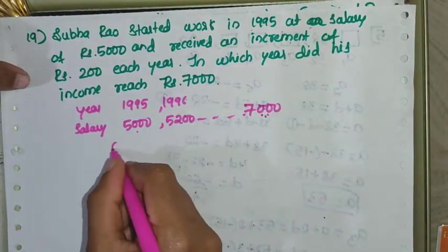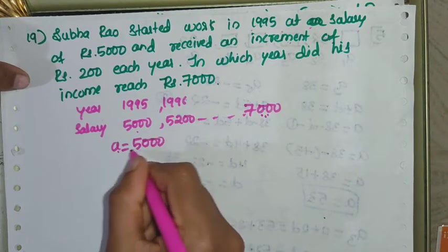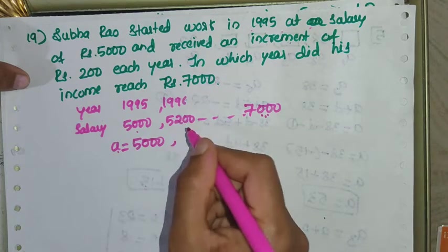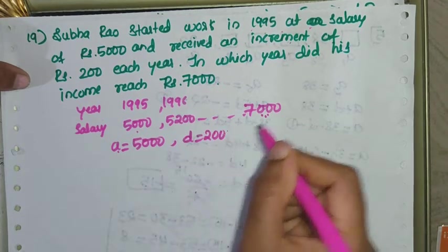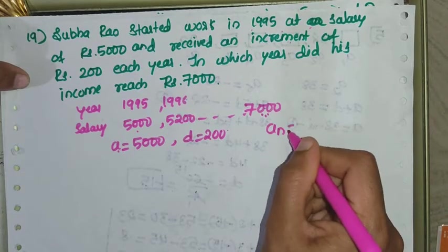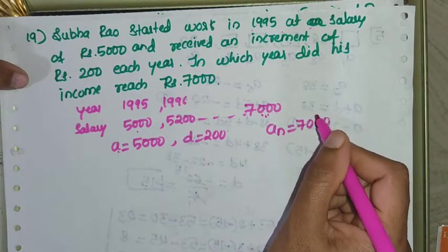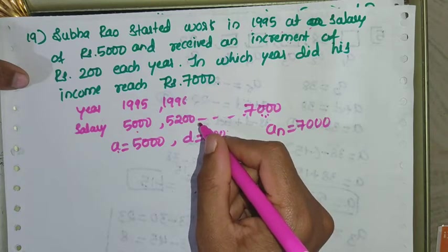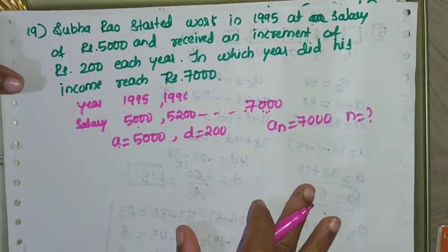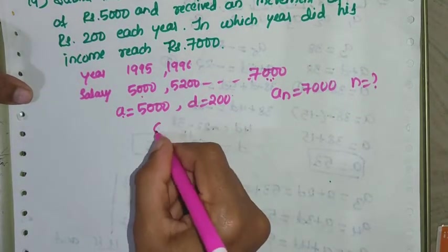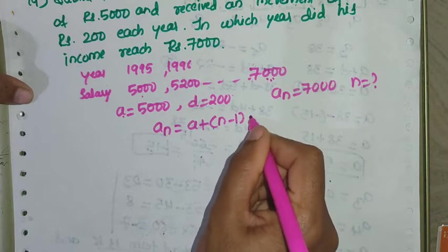Here the first term A is Rs. 5000, common difference D is Rs. 200, and the nth term is Rs. 7000. We need to find N. Using the formula: a_n = a + (n-1) × d.